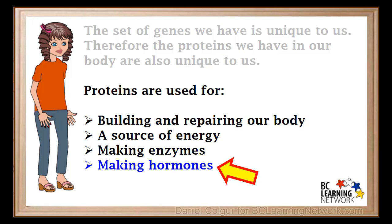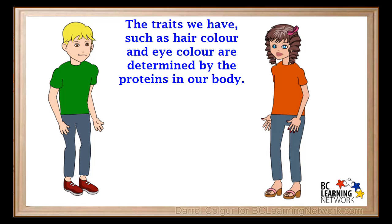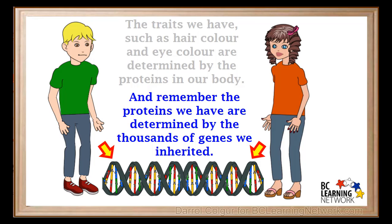Proteins also make hormones, substances which carry important messages throughout our body. Some proteins are also used to transport substances around our body. For example, the protein hemoglobin found in red blood cells carries vital oxygen from our lungs to all of our body cells. The traits we have, such as hair colour and eye colour, are determined by the proteins in our body. And the proteins we have are determined by the thousands of genes we inherited — those sections of DNA with just the right arrangement of base pairs in the centre of the double helix.